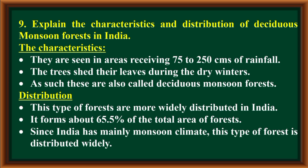Explain the characteristics and distribution of deciduous monsoon forests in India. Characteristics: They are seen in areas receiving 75 to 250 centimeters of rainfall. The trees shed their leaves during the dry winters, and as such these are also called deciduous monsoon forests.